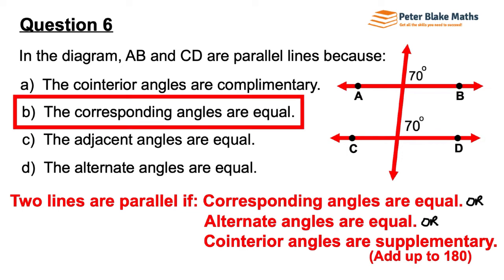Here, the 70s are in corresponding positions. We've got a top right-hand corner 70 in the top intersection, and a top right-hand corner 70 in the bottom intersection as well. So that shows that even though there are no parallel line markers on either AB or CD, by having those two angles in corresponding positions both indicated as 70 degrees, that passes the test of corresponding angles being equal. So we can draw parallel line symbols on AB and CD.